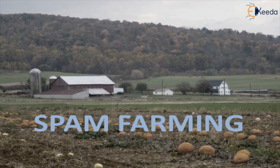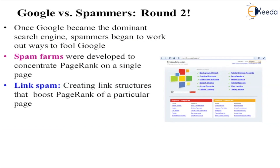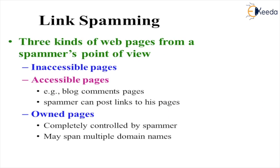Next is spam farming — Google versus spammers, round 2, or generation 2. As Google became the dominant search engine, spammers began to find ways to fool it. Spam farms were developed to concentrate page rank on a single page. The spam page ranking works around link structures, creating a kind of link spam — a link structure that boosts the page rank of a particular page. This automatically increases the page rank score of that spam website.